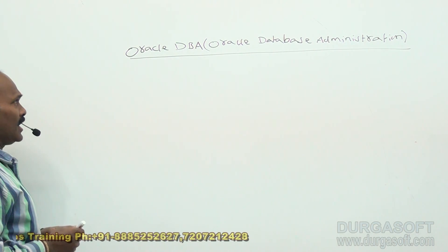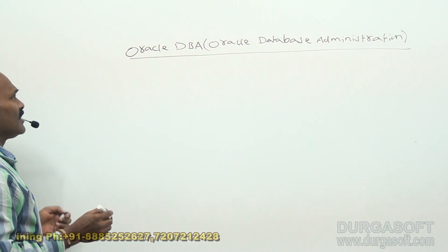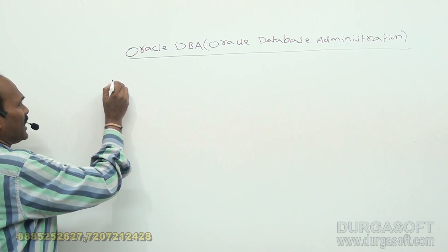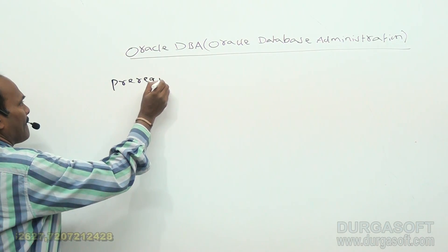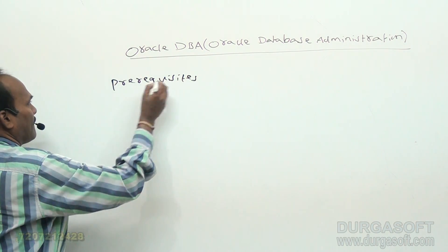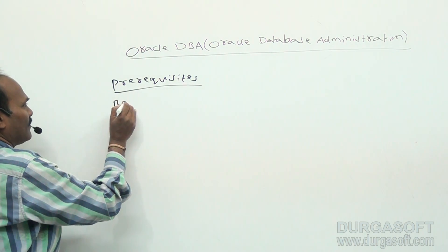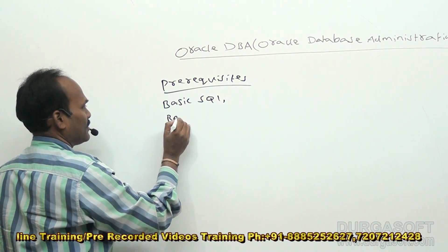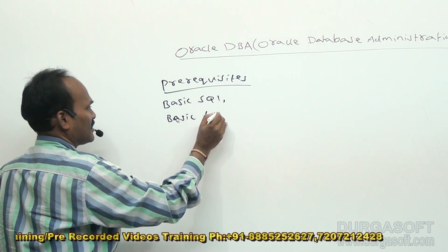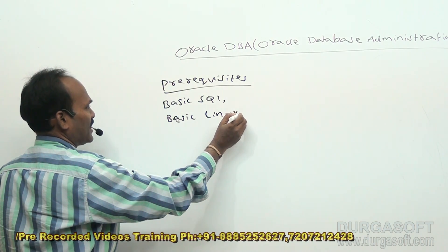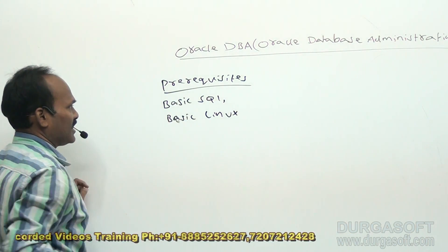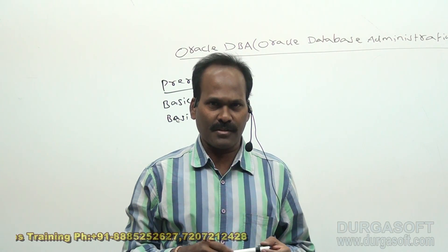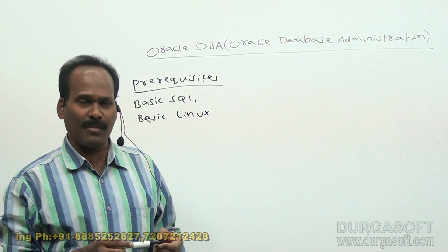Before I start Oracle Database Administration, I would like to explain the prerequisites for this course. The prerequisites are Basic SQL and Basic Linux or Unix operating system commands, and basic Linux shell scripting. I have already covered Basic SQL, Basic Linux commands, and shell scripts in previous video sessions, and that is more than enough for learning the Database Administration course.